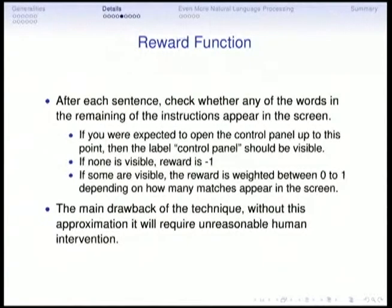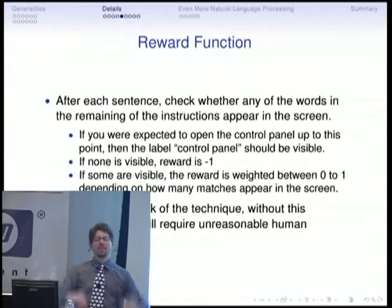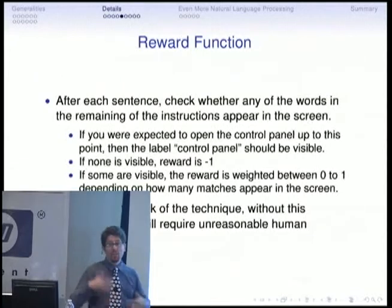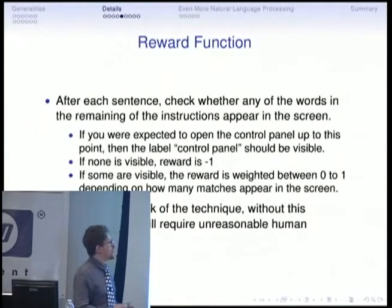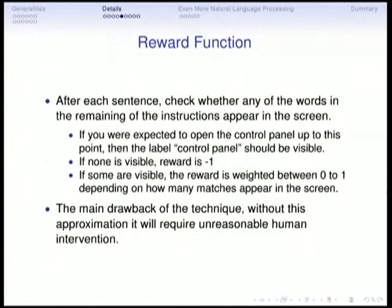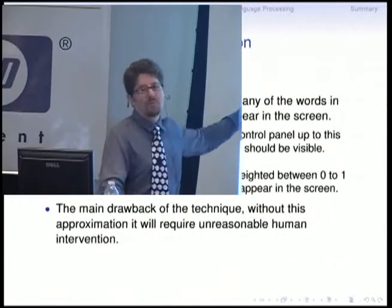The reward function checks which words are still visible after executing these actions. If a word is no longer visible, they consider it a dead end and give a reward of minus one. Otherwise, depending on the number of words visible, you get a weighted reward between zero and one. The main drawback is that without this automatic reward, you would need a human sitting there watching two million reboots of a virtual machine saying 'this good, this bad'. This automatic reward function is the key to making their technique work.